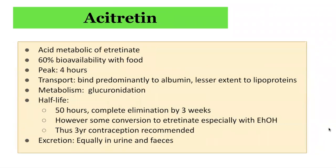Comparing to acitretin, which is an acid metabolite of etretinate: it has 60% bioavailability with food, with peak levels four hours after ingestion. Transport is predominantly via albumin, but also to a lesser extent via lipoproteins. Metabolism is via glucuronidation. Its half-life is longer than isotretinoin at 50 hours, and it is generally completely eliminated by three weeks. However, a small proportion of acitretin molecules can be converted to etretinate, especially with concurrent alcohol ingestion. The amount converted is difficult to predict, and therefore a three-year contraception period is recommended. Excretion is equally in urine and feces.